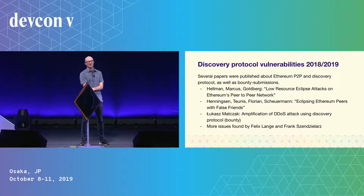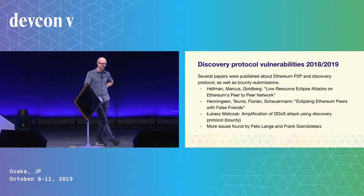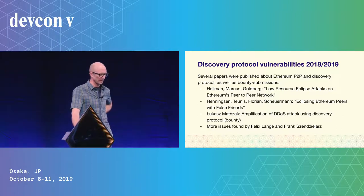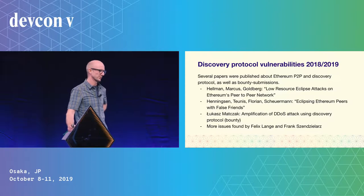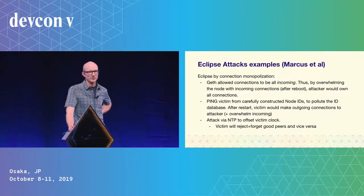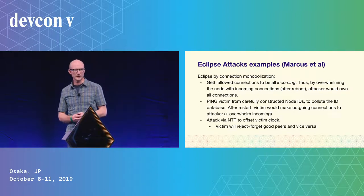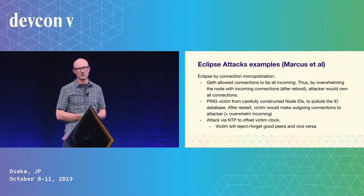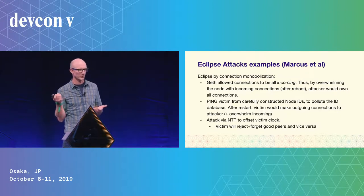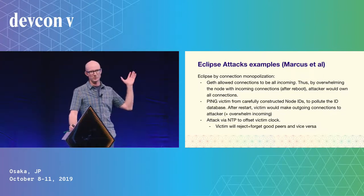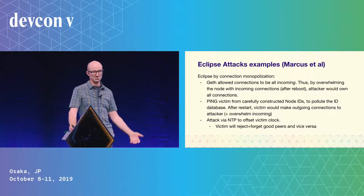During 2018 and 2019, there was significant research into the discovery protocol. Two papers were sent to us before public release about eclipse attacks, and others reported via the bug bounty — amplification and DDoS attacks. Felix and Frank on the Geth team found even more issues. One eclipse attack was that Geth dedicated half its connection slots to incoming and half to outgoing, but if outgoing slots weren't fully utilized, incoming connections could fill all the slots — so an attacker could simply overwhelm a Geth node with incoming connections and control all of its peers.